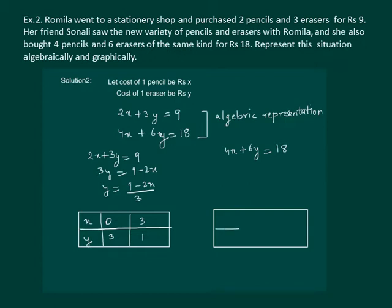Similarly let us form the table for the second equation. Solving the equation further we get 6y equal to 18 minus 4x. Y equal to 18 minus 4x by 6.